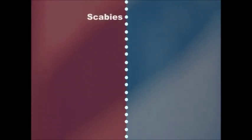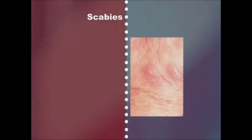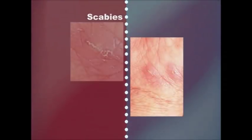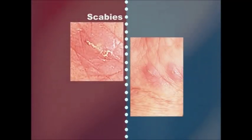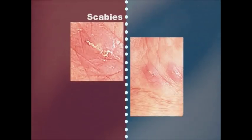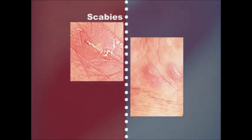Scabies is a highly contagious skin disease caused by the itch mite. Vesicles and pustules usually form from the irritation caused by the parasites or from scratching the affected areas.